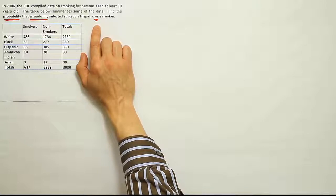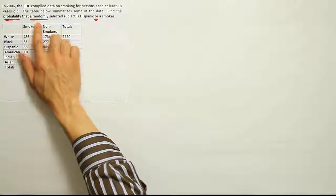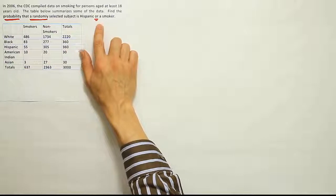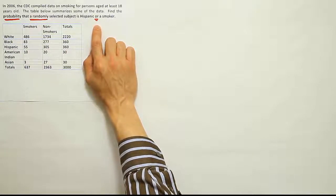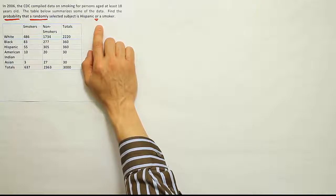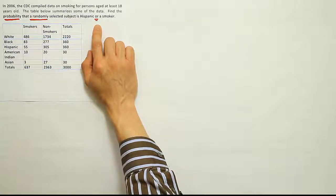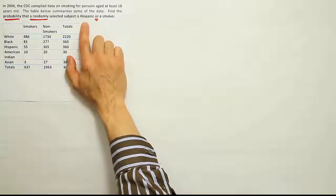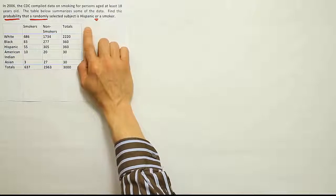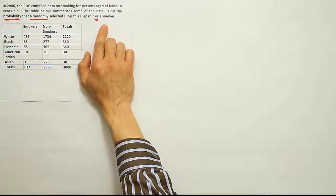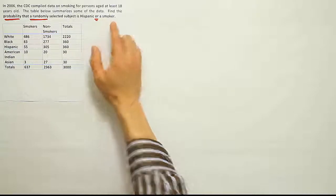We think this problem is addition rule. Find the probability that a randomly selected subject is Hispanic or a smoker. Whenever you have the word or in the problem, you can use addition rule to solve the problem. So we're going to take the probability that the subject is Hispanic and add it to the probability that the subject is a smoker. But then we want to subtract anybody we would have counted twice because there might be some Hispanic smokers that we might have counted twice.